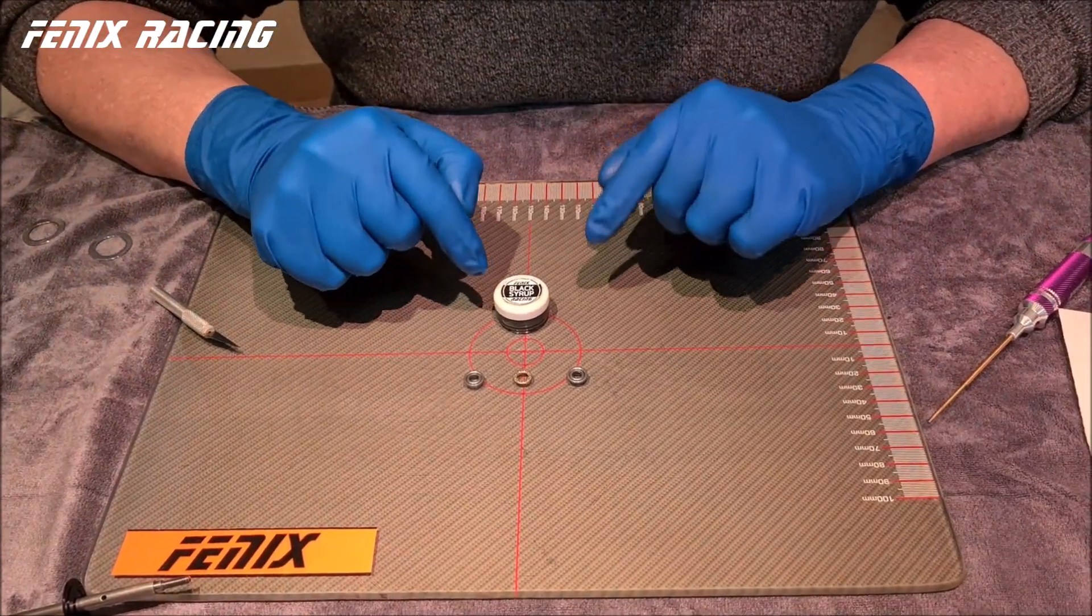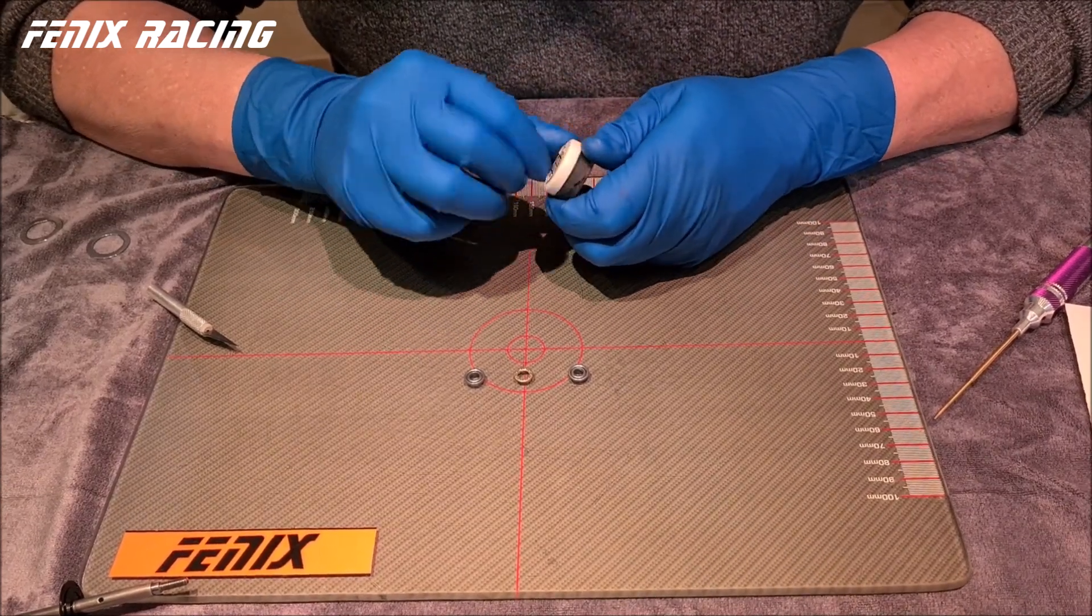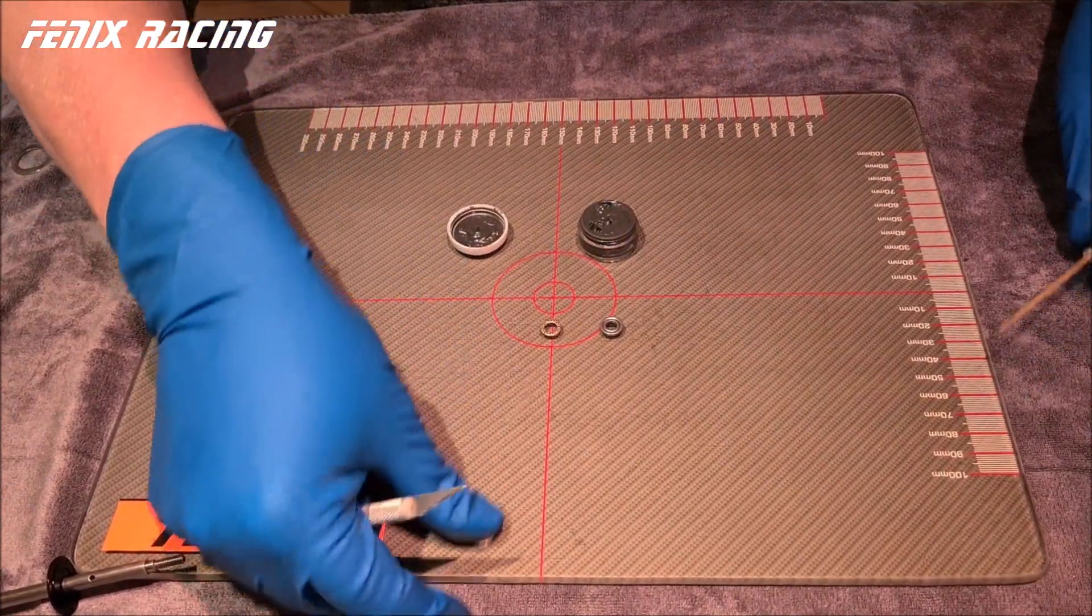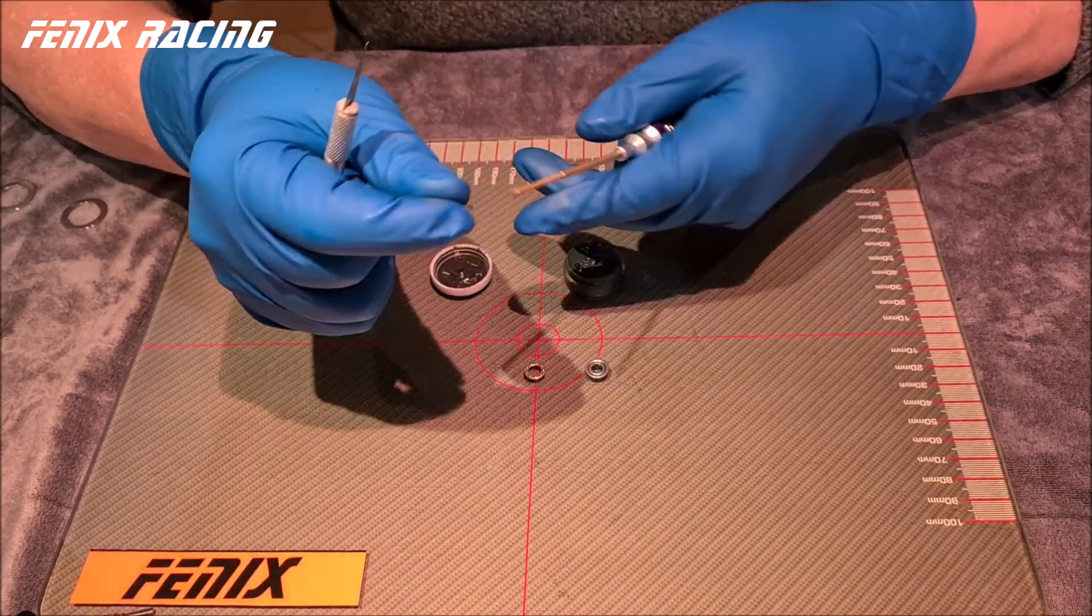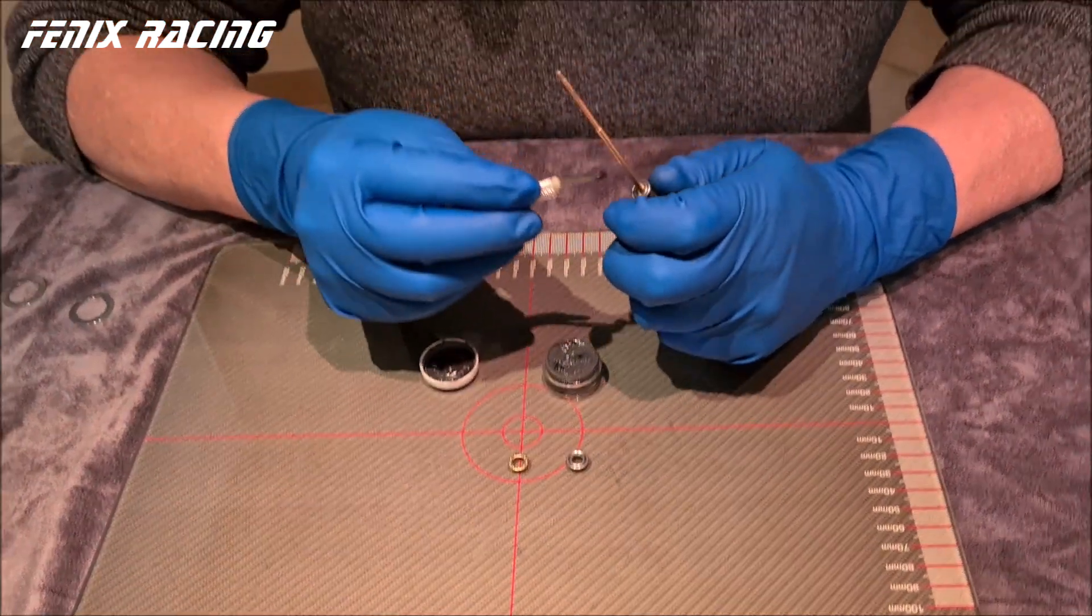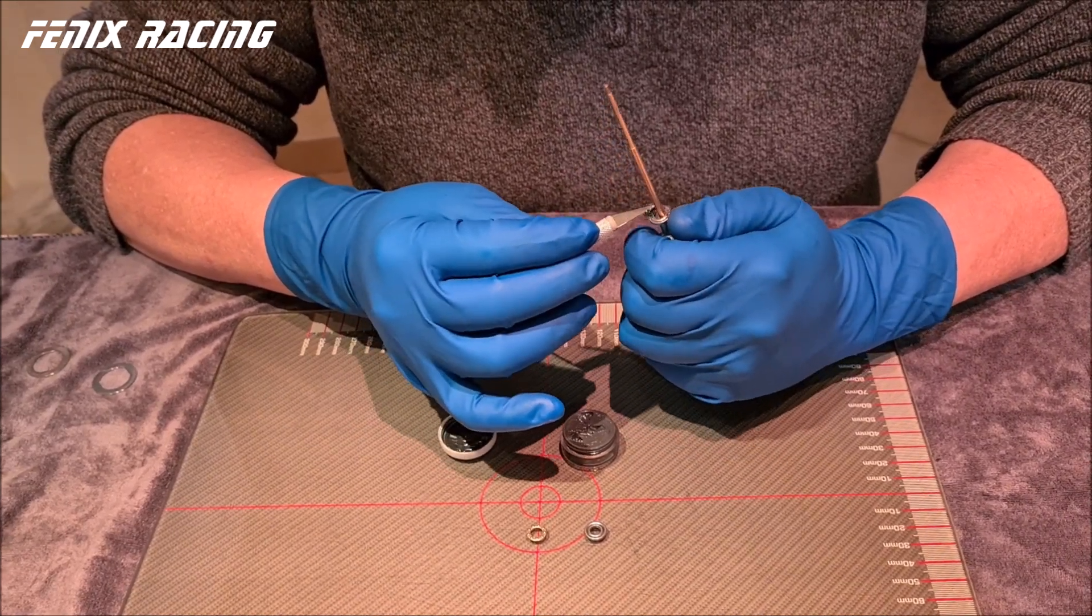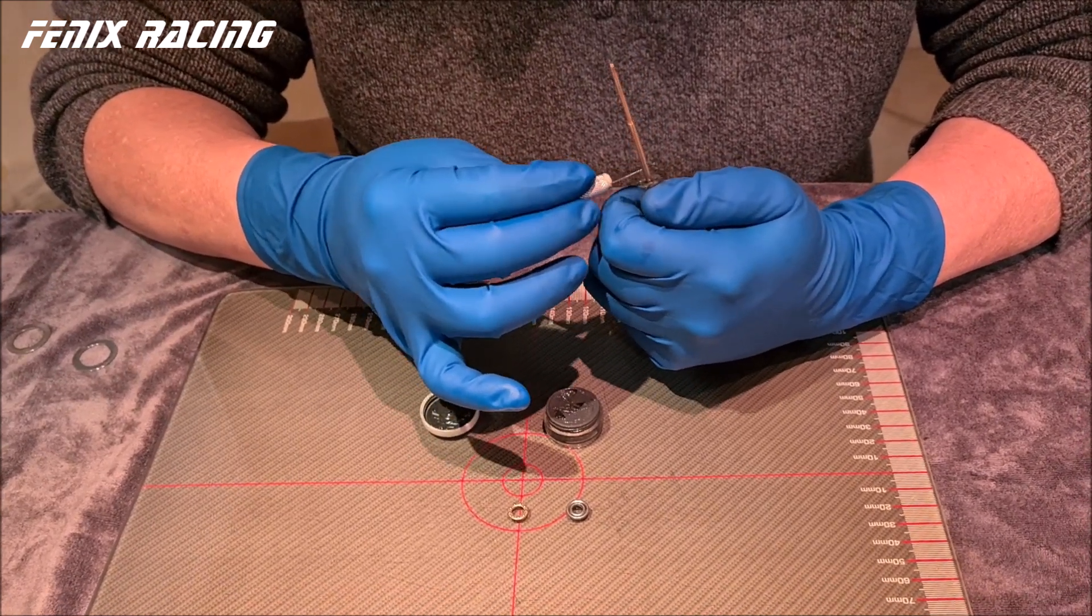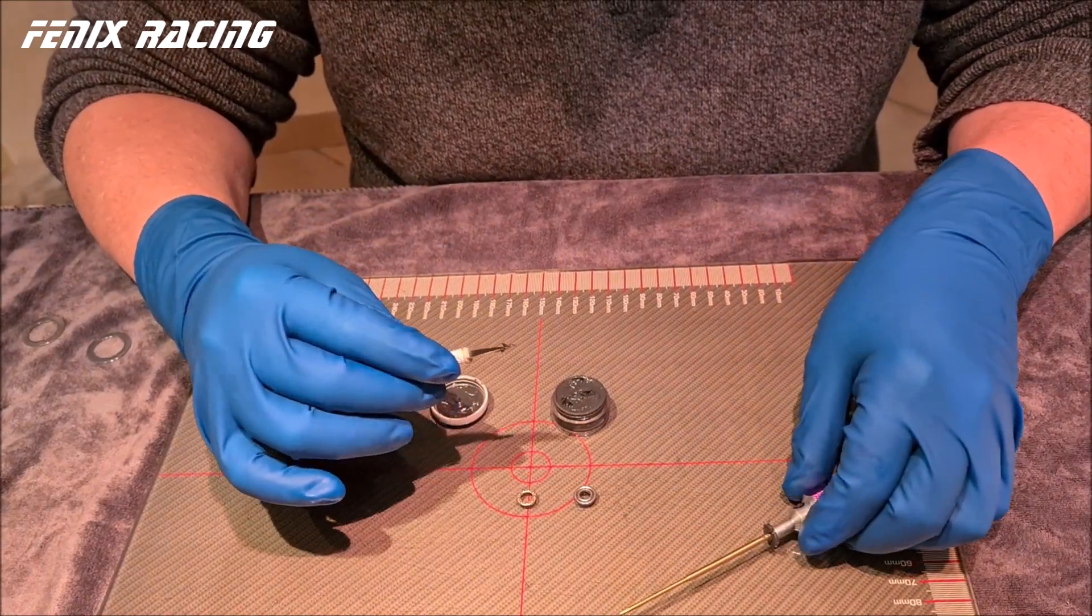Okay, now we are going to work the thrust bearing with black syrup. We take first the part without any logo and we insert it over a 1.5mm key. Spread the amount of grease here.